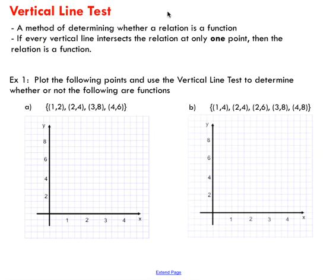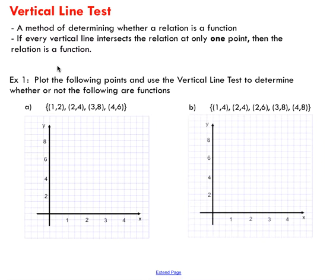Pretty much what the vertical line test does is tell you if a relation is a function. The way it works is: if you take a vertical line and pass it over your relation, and at each point there is only one point on your vertical line, then you've got yourself a function.